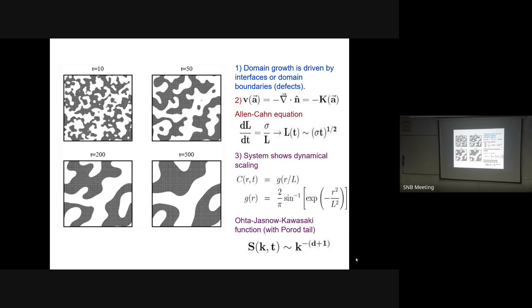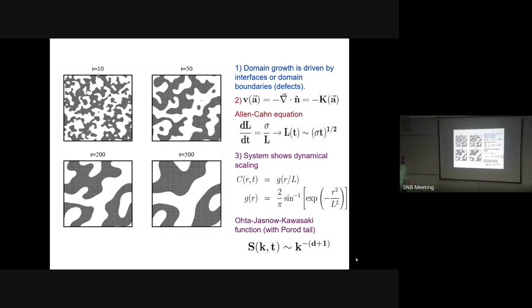The Porod tail is surprising because normally structure factor tails go in a Gaussian manner at large wave vectors. The singular structure at large k is a consequence of scattering from sharp interfaces - the sharp boundaries between up and down spins. You see a precise Porod law if the interface is a step function; if more gradual, you see a softening of the Porod law. The Porod law holds when the interface width becomes irrelevant compared to the domain length scale.